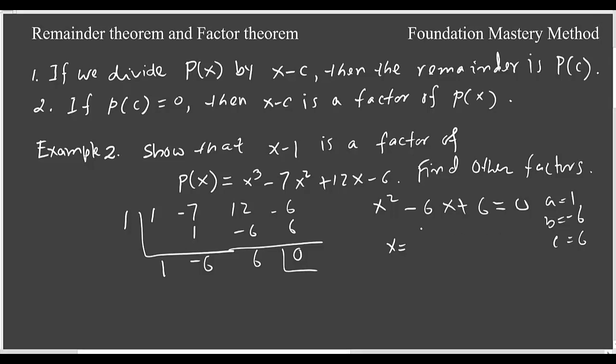So 4 times 1 times 6 is 24, over 2 times a is 1. So you end up with (6 ± √(36 - 24))/2, which is (6 ± √12)/2. So √12 can be written as 2√3, giving (6 ± 2√3)/2. The more simplified version will give you 3 ± √3.